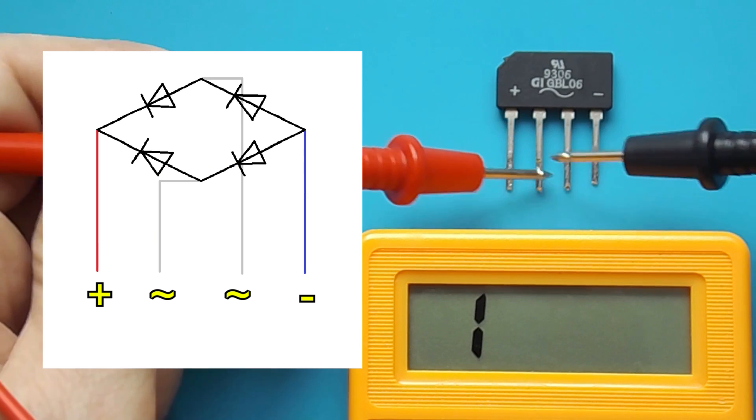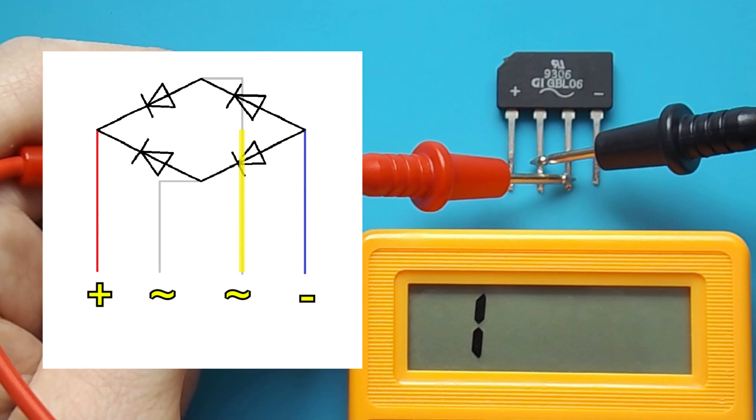Then I check the two AC inputs, first in one position and then in another. If the multimeter readings remain the same, then this is good.